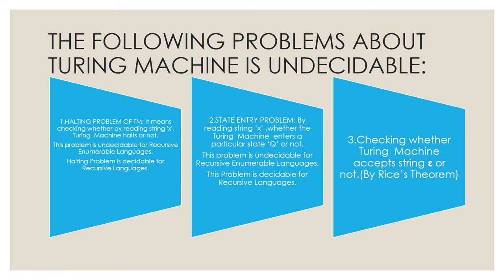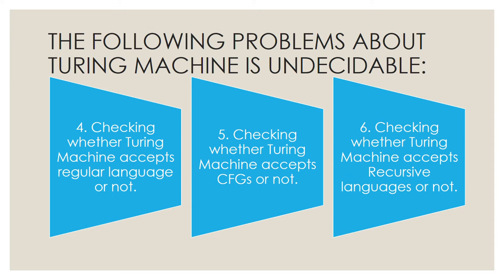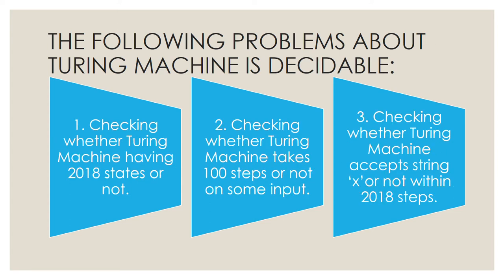The third point is checking whether the Turing machine accepts string epsilon or not, and this is proved by Rice's theorem. Fourth is checking whether the Turing machine accepts a regular language or not — this is undecidable. Fifth is checking whether the Turing machine accepts CFLs or not. Sixth is checking whether the Turing machine accepts recursive languages or not. All of these are undecidable.